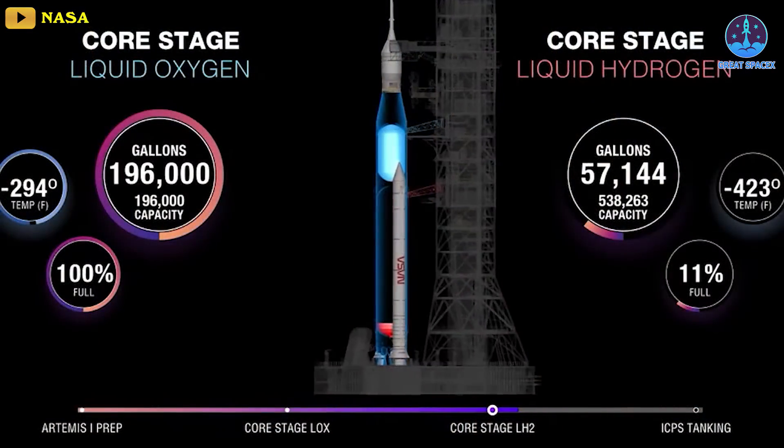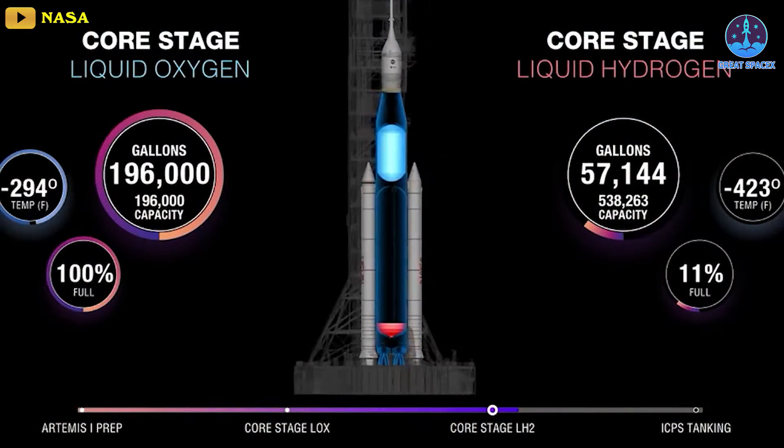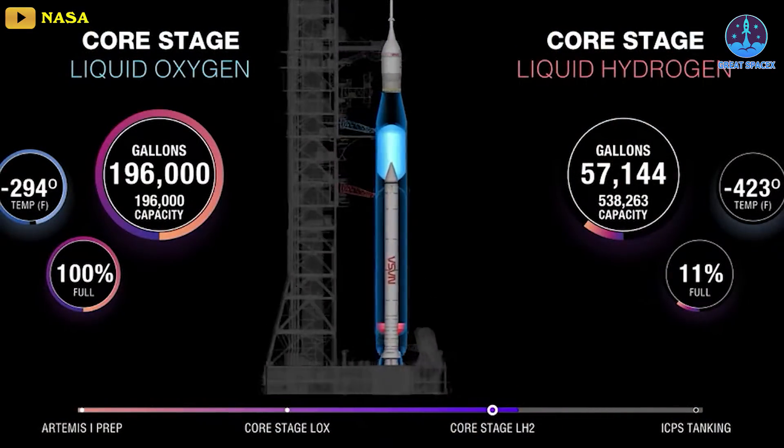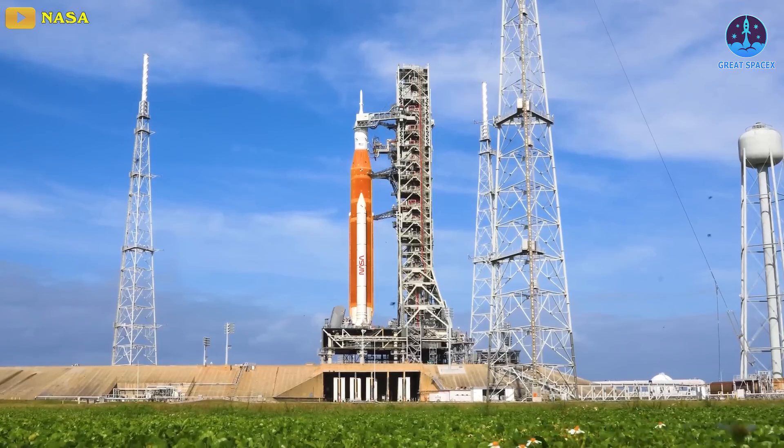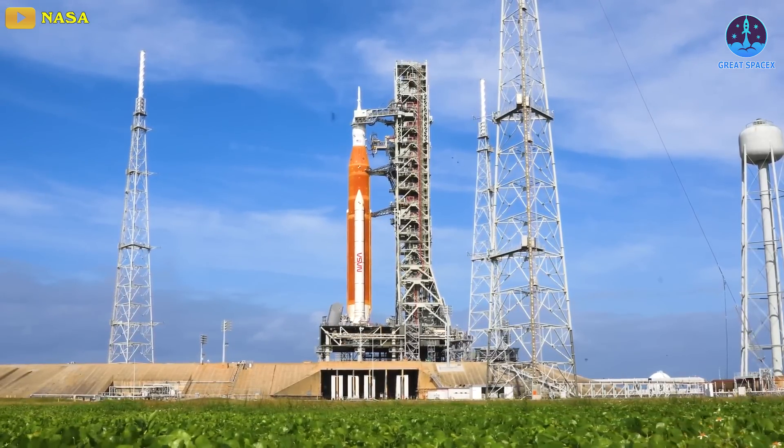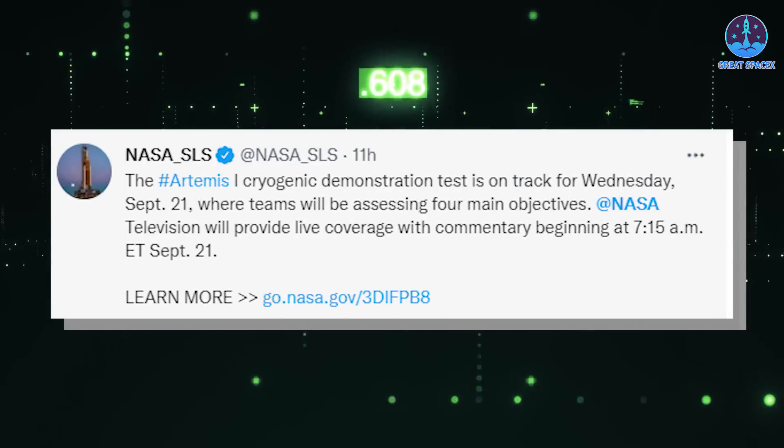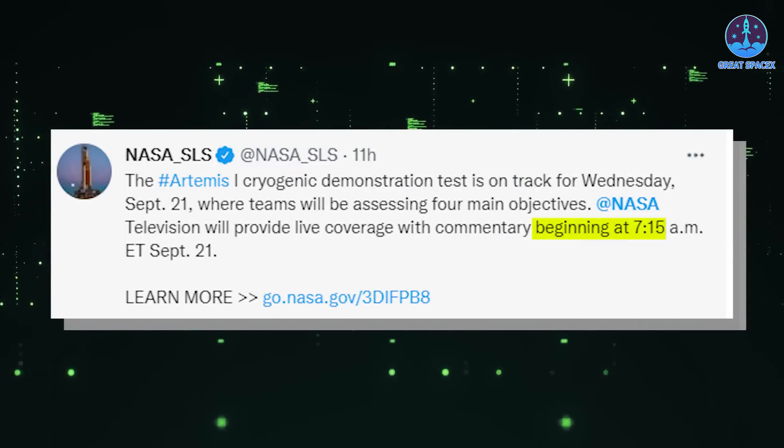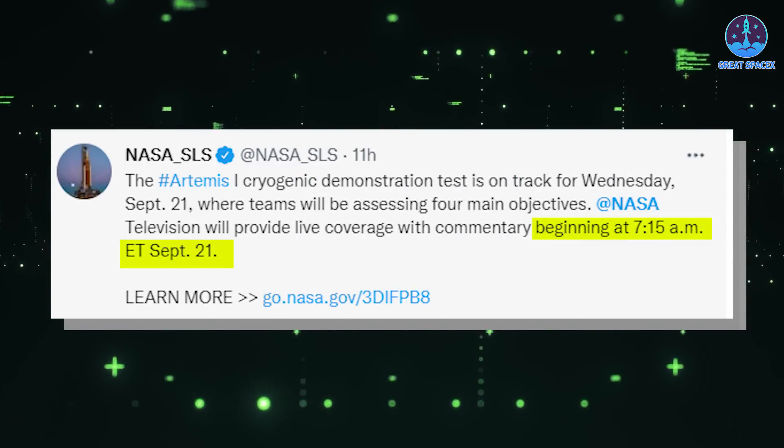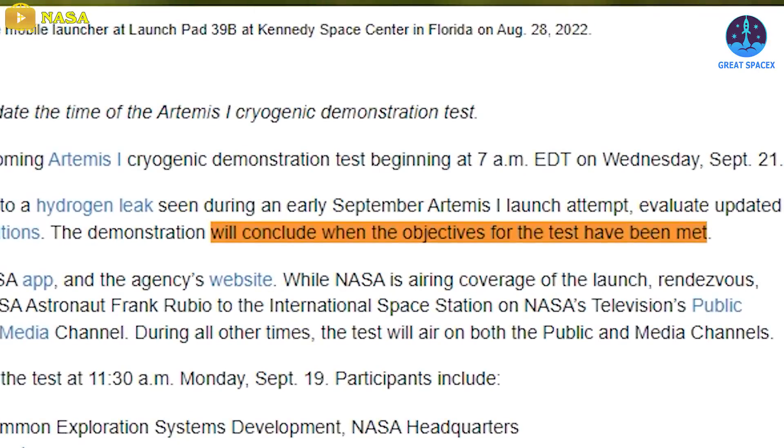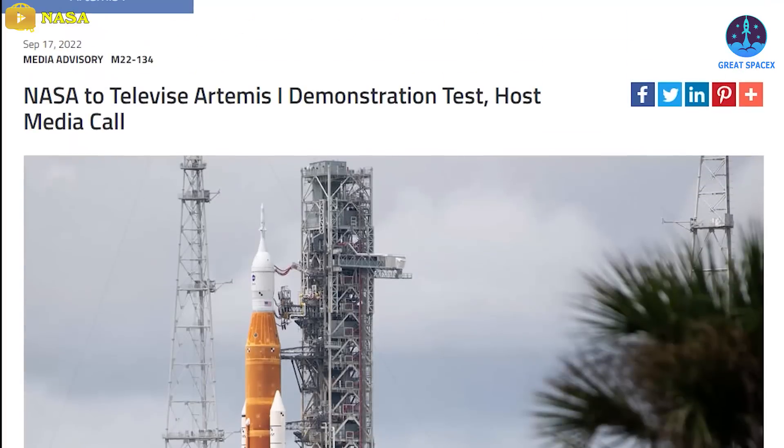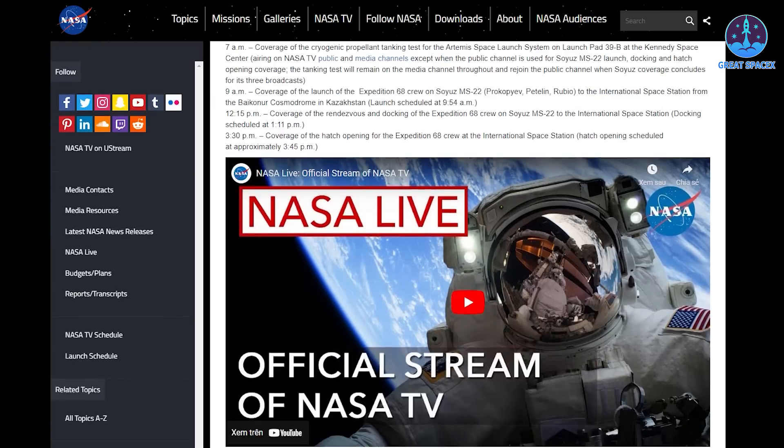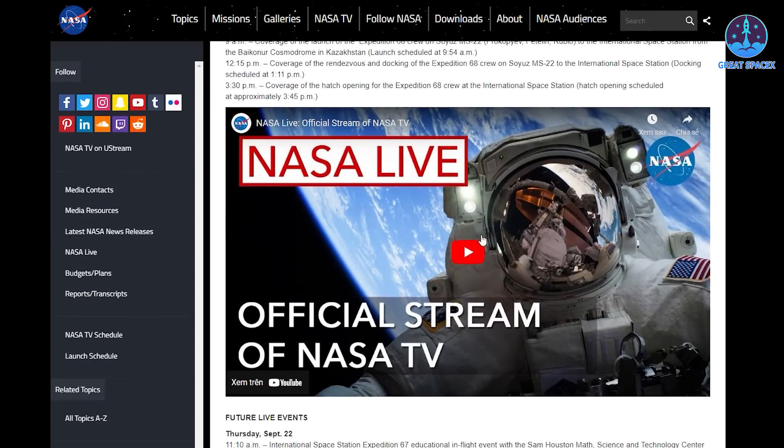The Artemis 1 team plans to pump super-cold propellant, which consists of liquid hydrogen and liquid oxygen, into the SLS on Launch Pad 39B at NASA's Kennedy Space Center in Florida. The operation is scheduled to begin at 7:15 a.m. Eastern Daylight Savings Time on Wednesday. It will conclude when the objectives for the test have been met, NASA officials wrote in an update on Friday. You can watch the test live here directly via the space agency.